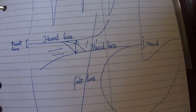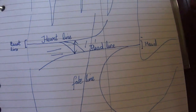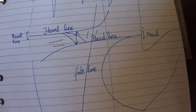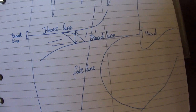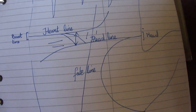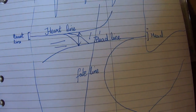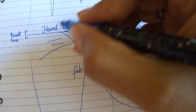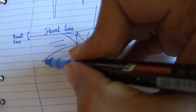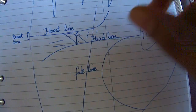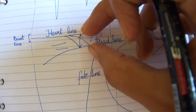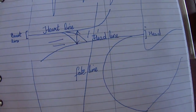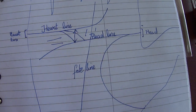Good morning everyone, this is another session on palmistry and we will be discussing about the quadrangle in this video. The quadrangle is the area defined between the heart line — the top line — and the headline. From this area we get to know whether the person is broad-minded or a narrow thinker.